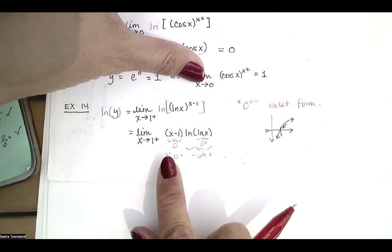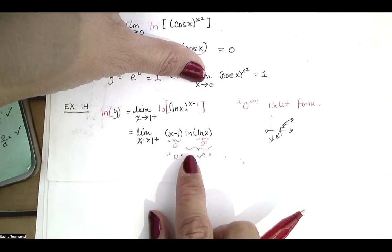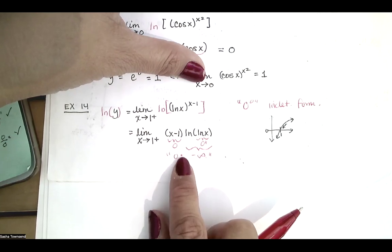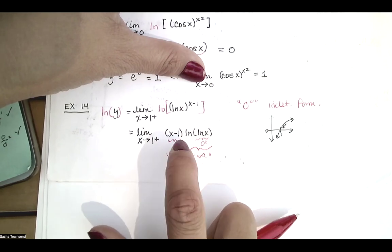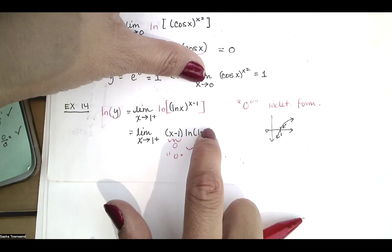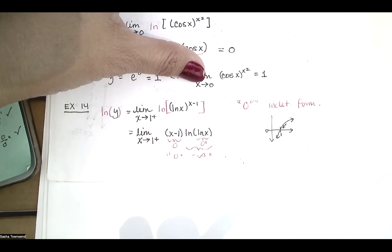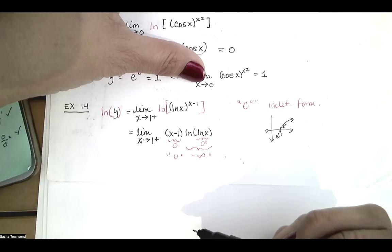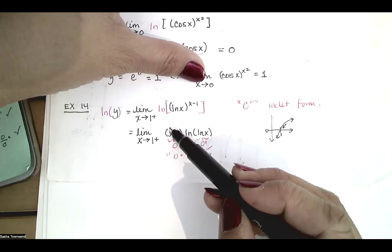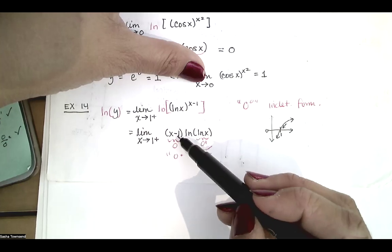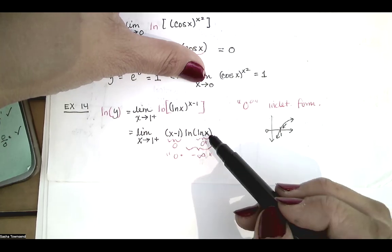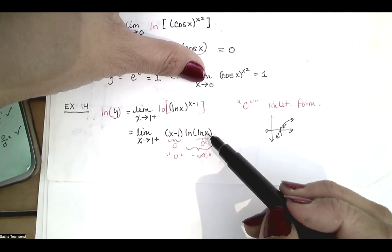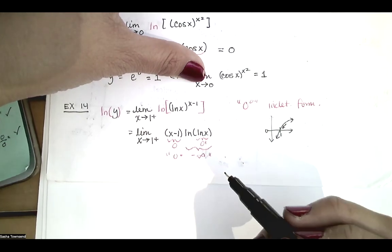In order to get rid of that 0 times negative infinity indeterminate form, we need to rewrite this as a quotient. We either take 1 divided by one factor and put it in the denominator, or 1 divided by the other factor. If we take 1 divided by the first expression and put it in the denominator, we'll have a negative infinity over infinity indeterminate form. If we put 1 divided by the other in the denominator, we'll have a 0 over 0 indeterminate form. So it's really up to you.